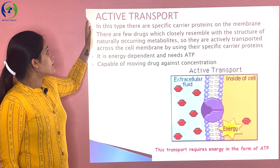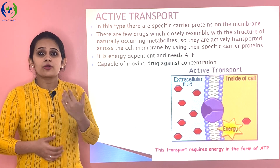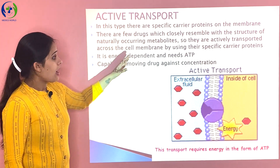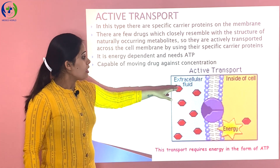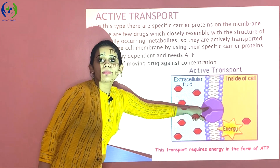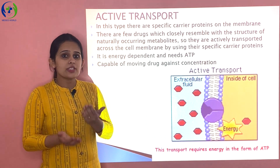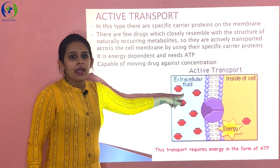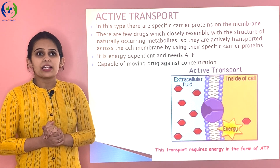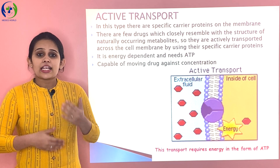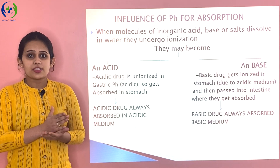The next mechanism is active transport. Very few drugs are absorbed by this mechanism — only those drugs whose natural metabolites are present in the body. For example, iron is present inside the cell, and in iron deficiency anemia we give external supplementation of iron. A carrier protein on the cell membrane recognizes the structure of the iron supplement as similar to the iron inside the cell, binds with it, and transports it into the cell. Examples include iron supplements, vitamins, amino acids, and sugars which occur naturally in the body.